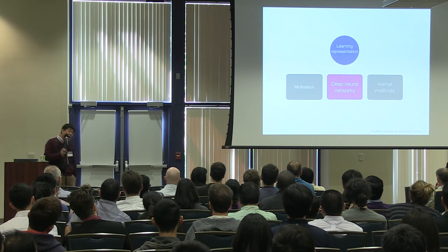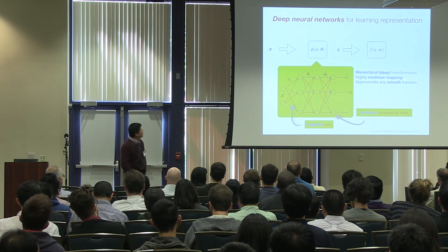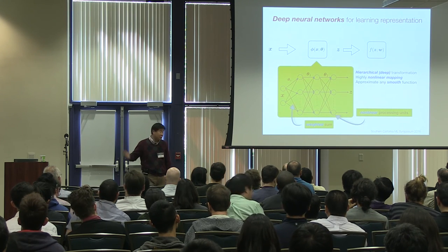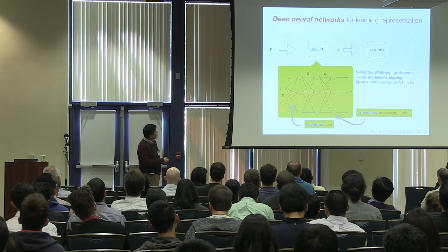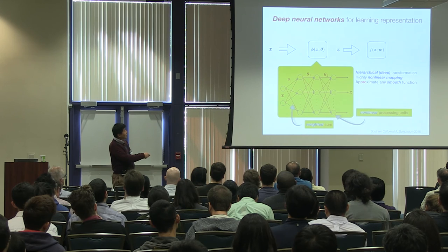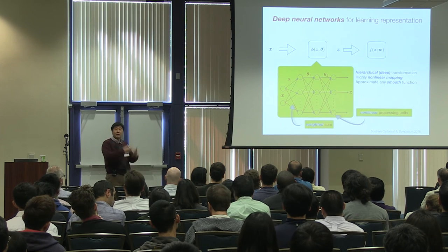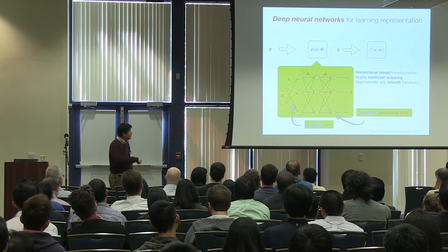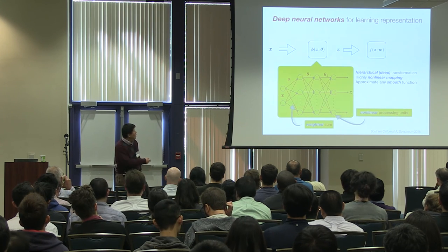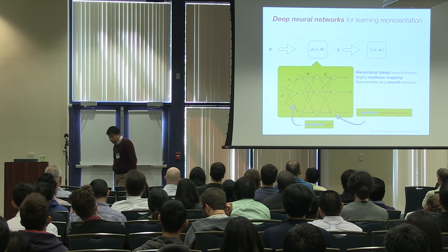Let me show you two different ways of learning this representation. The first is deep learning. From input x to representation z, we can use deep learning to parameterize this function. Deep learning is a hierarchically organized set of nonlinear processing units — you start from x, eventually output z, with a bunch of nonlinear processing units in the middle. It implements a highly nonlinear mapping that can approximate any smooth function.